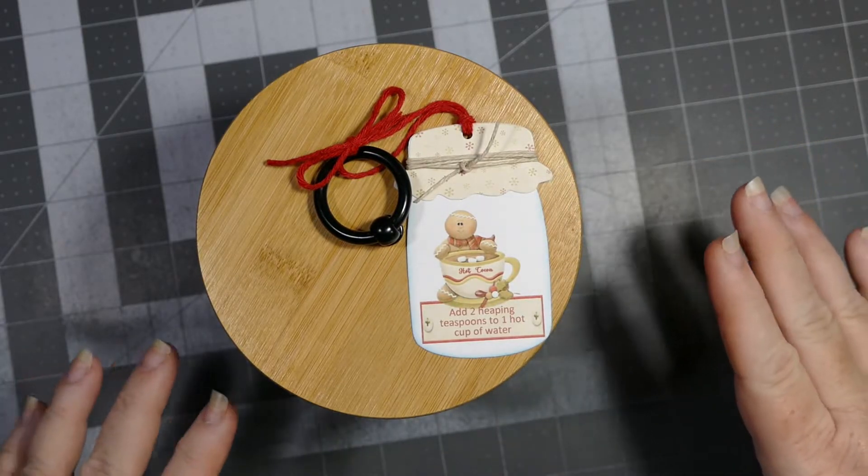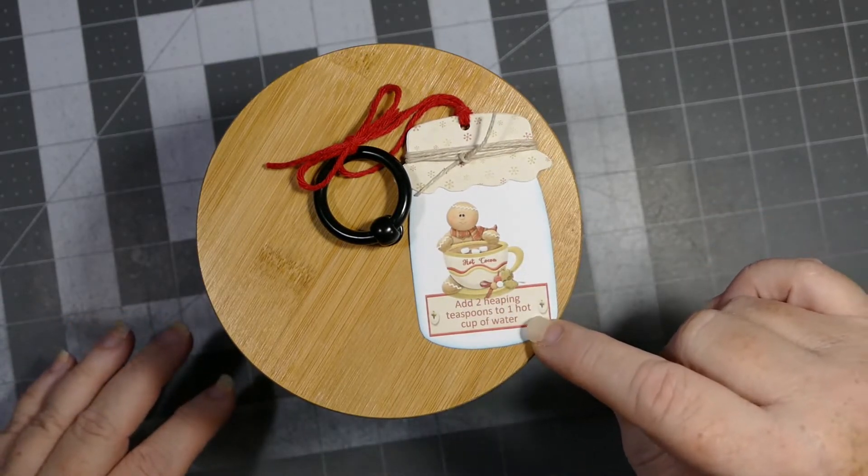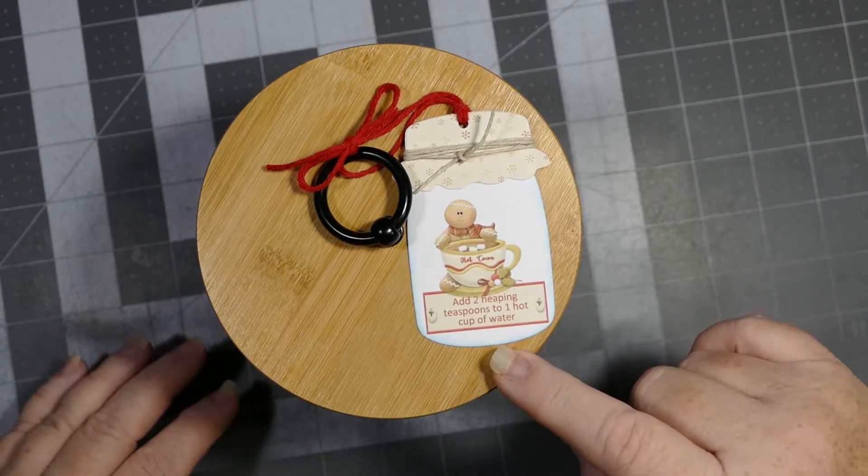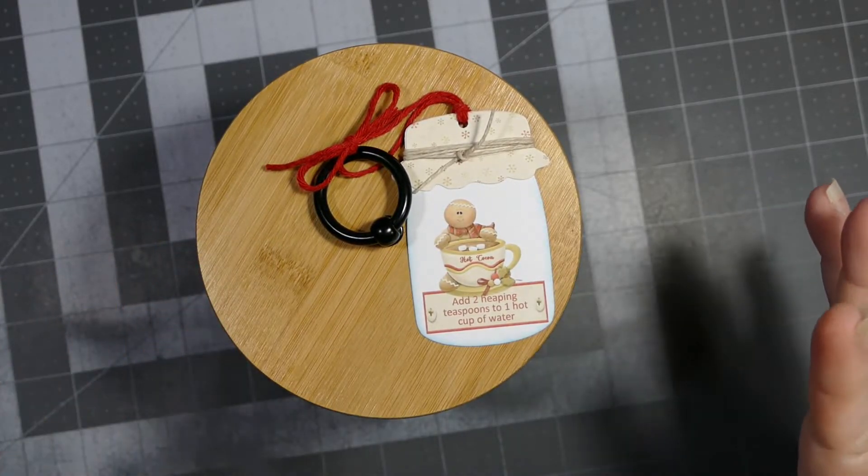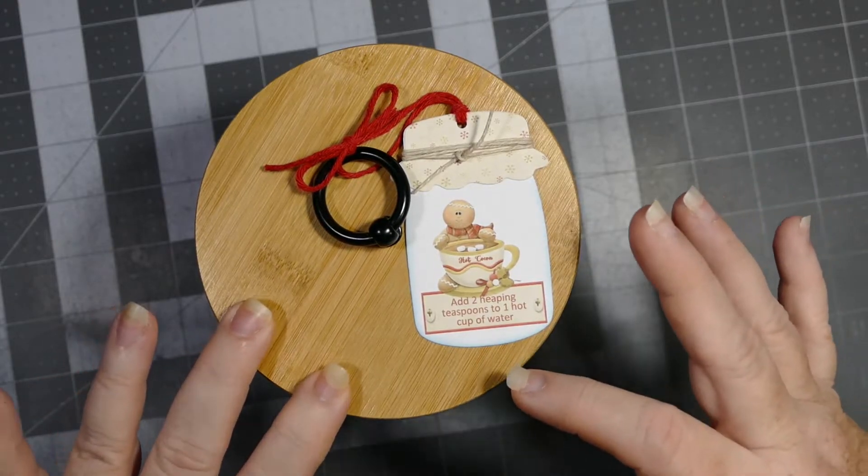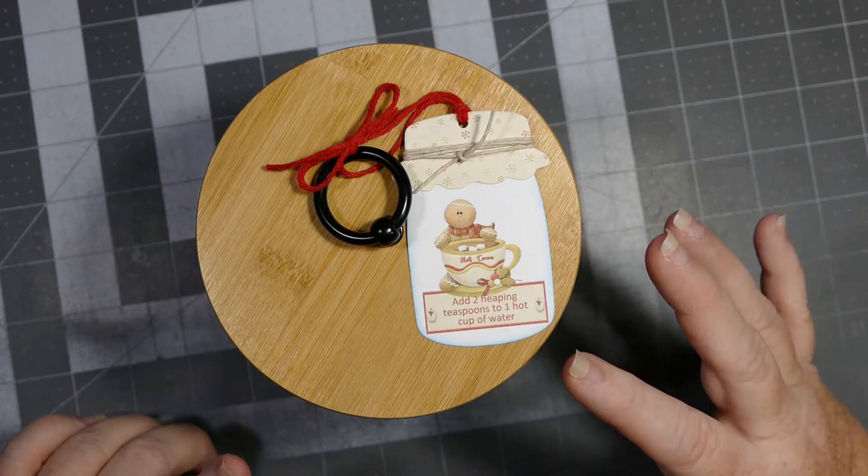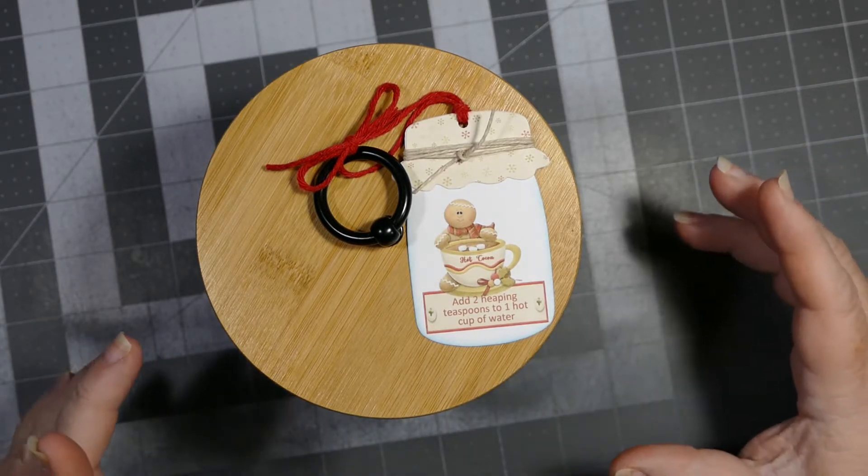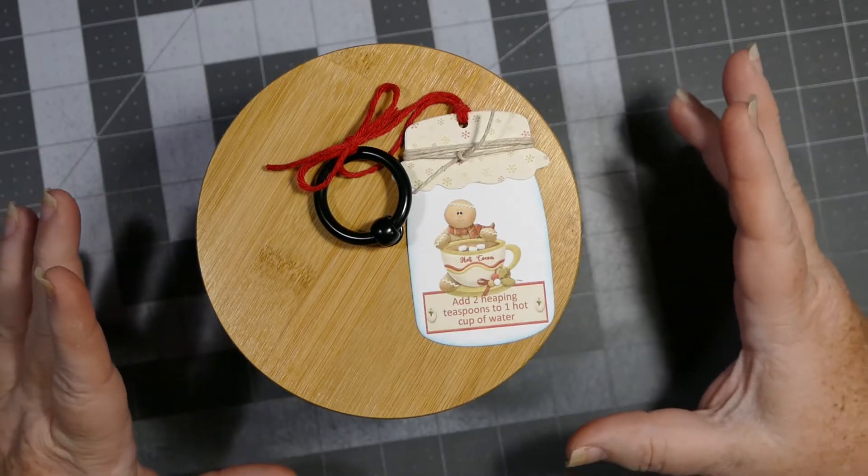I put on here it says hot cocoa on the cup, and then down here it says add two heaping teaspoons to one hot cup of water. My daughter corrected me and said I should have put add two heaping teaspoons to one cup of hot water. I don't know what the difference but it sounds better. But I'd already printed them out and they're coming in the morning, so I don't have time to redo them.